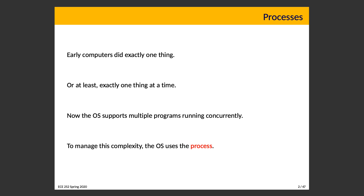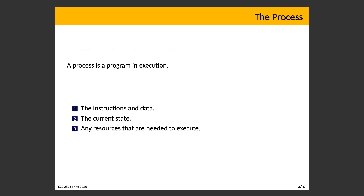To manage this complexity, the operating system uses the concept of a process. The formal definition of a process is it is a program in execution, and it is composed of three things. Number one, the instructions and the data. Notably, the compiled executable is the program, and that is only one part of the process.